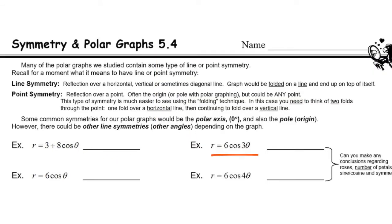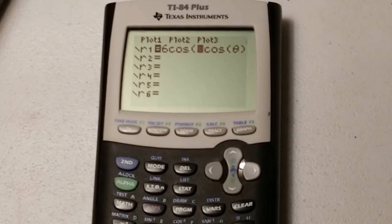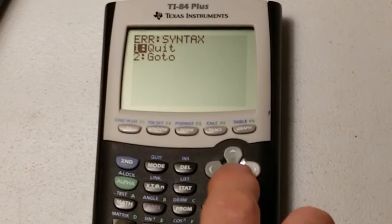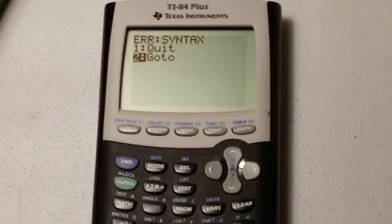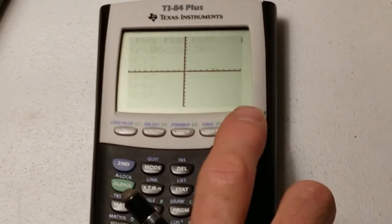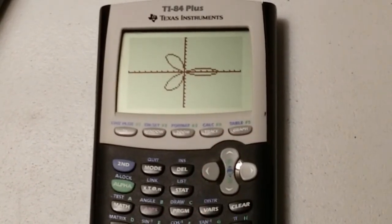6 cosine of 3 theta. Do you know what graph that's going to be? That's right. It's going to be a rose. Remember, the rose always has that n theta. How many petals is this rose going to have? Let's check it out on the calculator. 6 cosine of 3 theta. Our prediction is correct. We end up with a three-petaled rose.